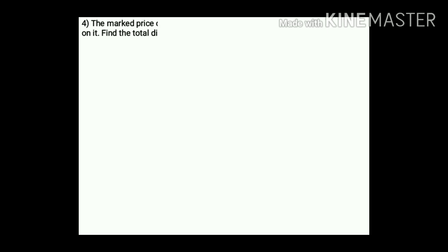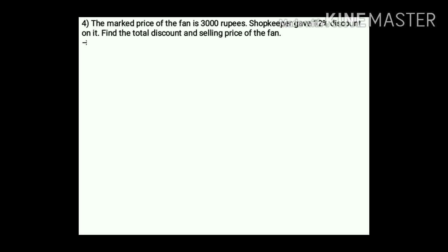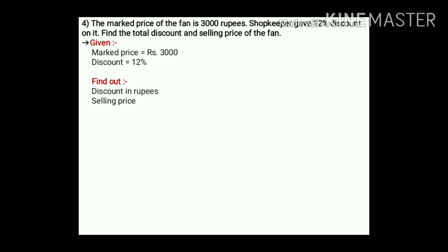Question number 4: the marked price of a fan is rupees 3000. The shopkeeper gave 12% discount on it. Find the total discount and selling price of the fan. Marked price and discount percentage are given; we have to find discount in rupees and selling price. Given: MP = rupees 3000, discount = 12%.